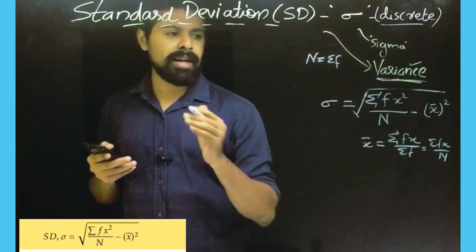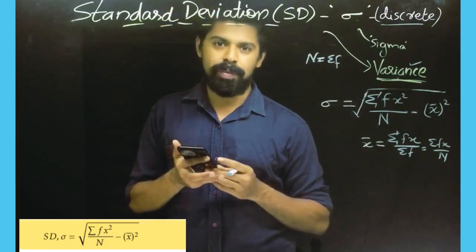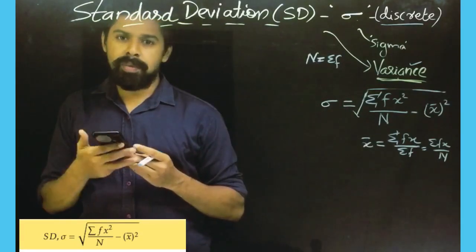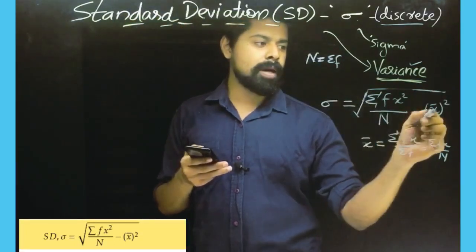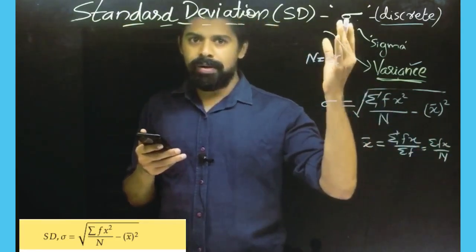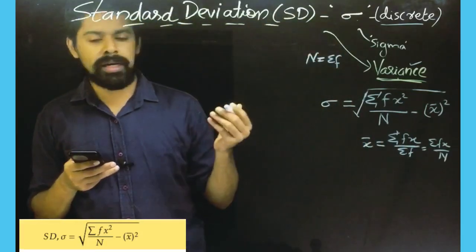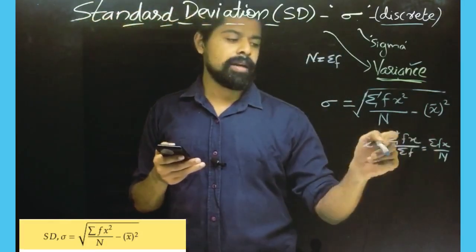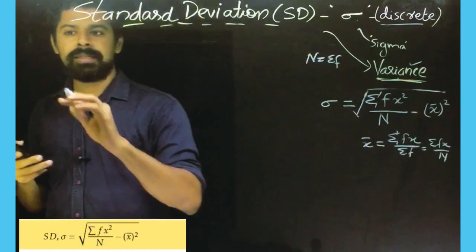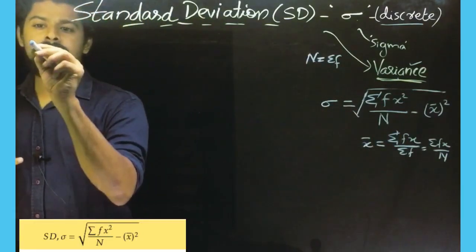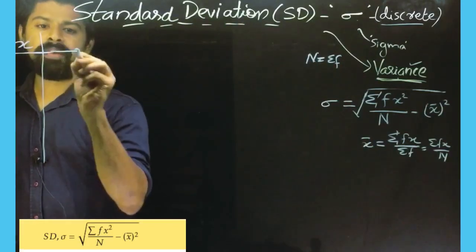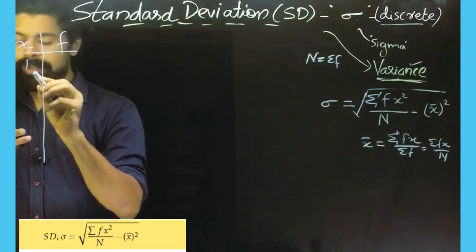We can learn the mean and standard deviation. We can learn the mean and x-bar from the discrete frequency, the same method covered in the previous statistics class. The x-bar means the mean. x-bar means the mean, and from the mean we find the standard deviation.